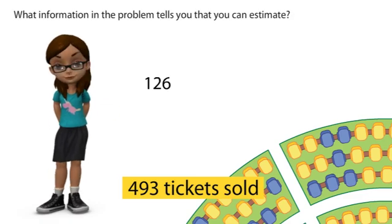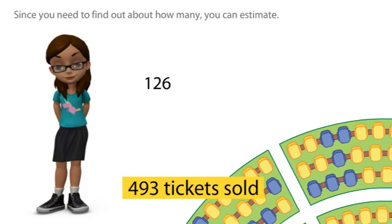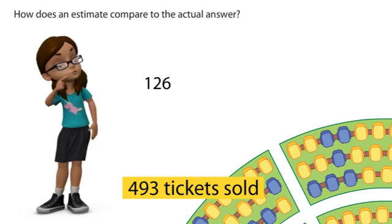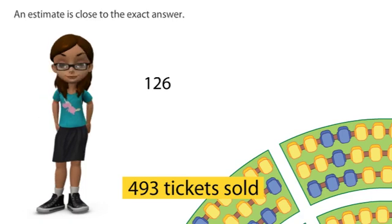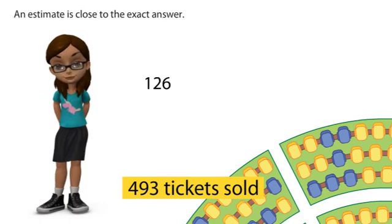What information in the problem tells you that you can estimate? Since you need to find about how many, you can estimate. How does an estimate compare to the actual answer? An estimate is close to the exact answer.